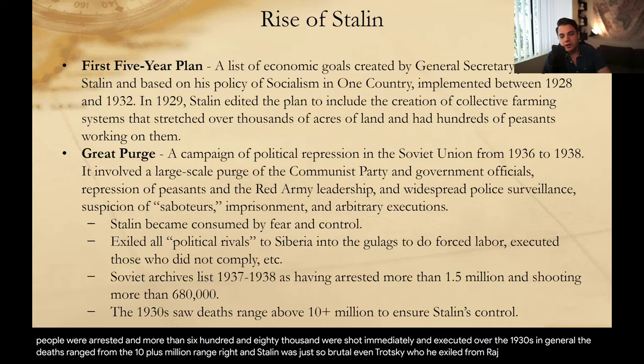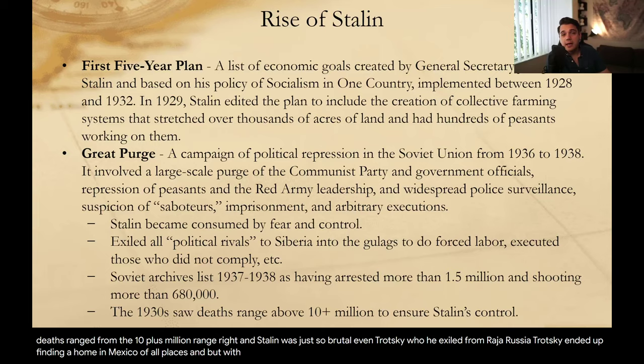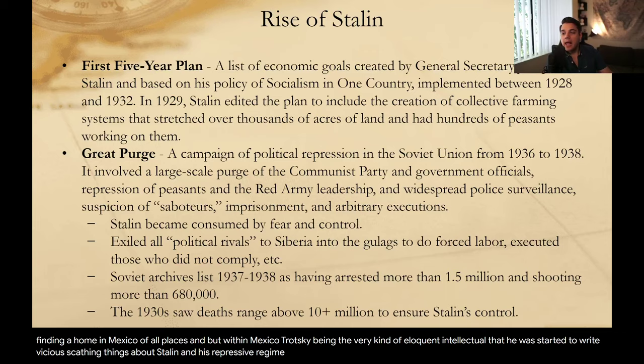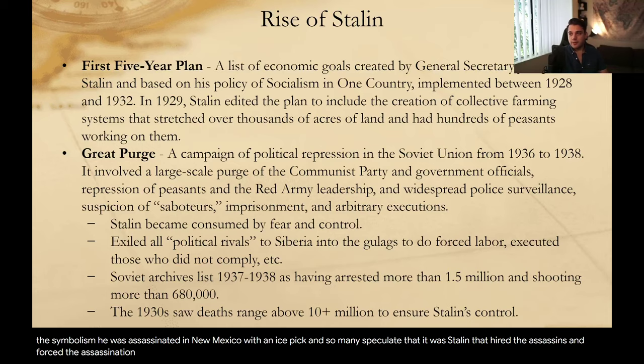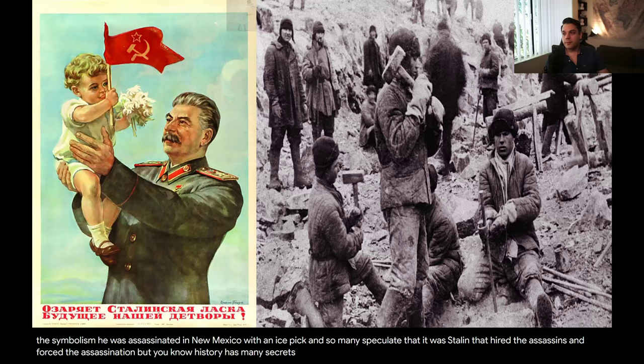Even Trotsky, who he exiled from Russia, ended up finding a home in Mexico of all places. Within Mexico, Trotsky — being the very eloquent intellectual that he was — started to write vicious, scathing things about Stalin and his repressive regime. And I can't make this up: Trotsky was later assassinated with an ice pick. Think of the symbolism — he was assassinated in New Mexico with an ice pick. Many speculate that it was Stalin who hired the assassins and forced the assassination.